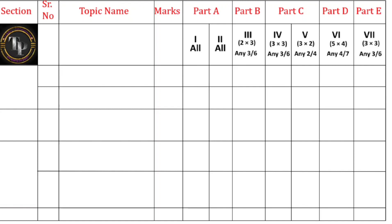Let us start with the midterm syllabus. From physical chemistry we have two chapters: Solution and Electrochemistry. From the entire physical chemistry you will get 47 marks in the midterm exam. From the Solution chapter, you will get a total of 24 marks. Four MCQs — question numbers 1, 2, 3, and 4 — all belong to Solution. One fill in the blanks question, question number 16, also comes from Solution. Additionally, two two-mark questions, question numbers 21 and 22, belong to Solution.